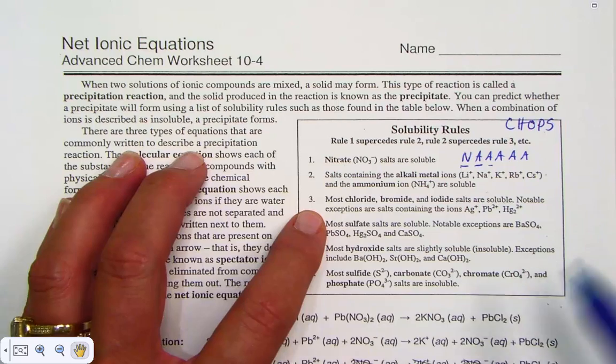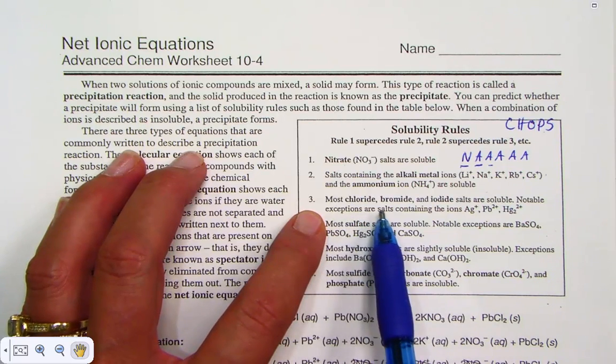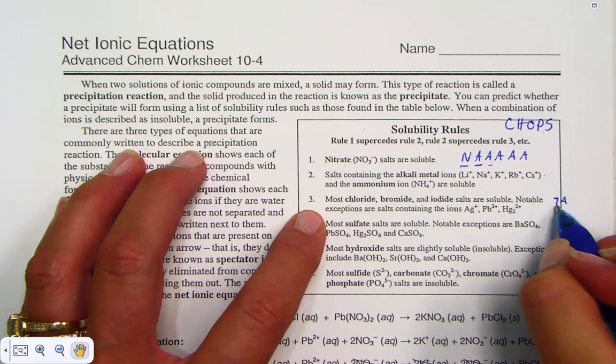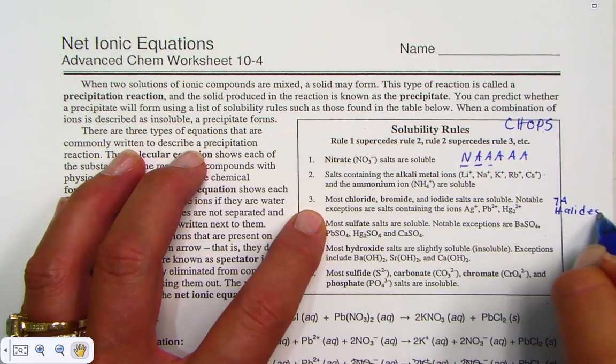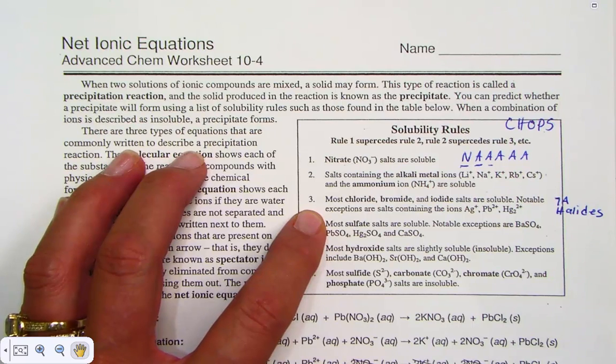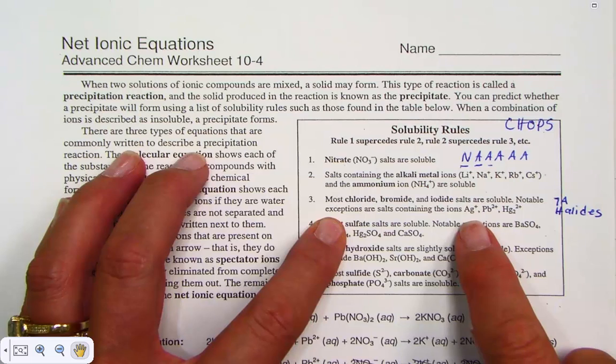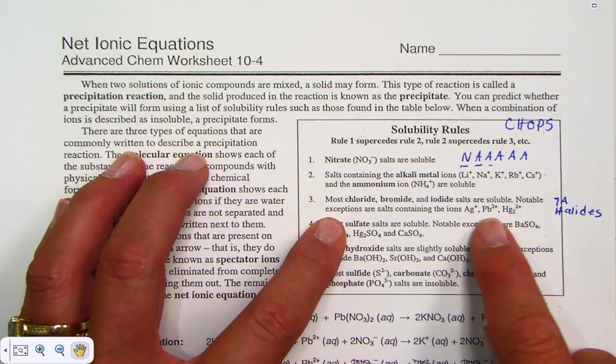Rule three: Most chlorides, bromides, and iodides—the groups of 7A called halides from the family known as halogens—tend to be soluble except for the heavy metals of silver, mercury, or lead.